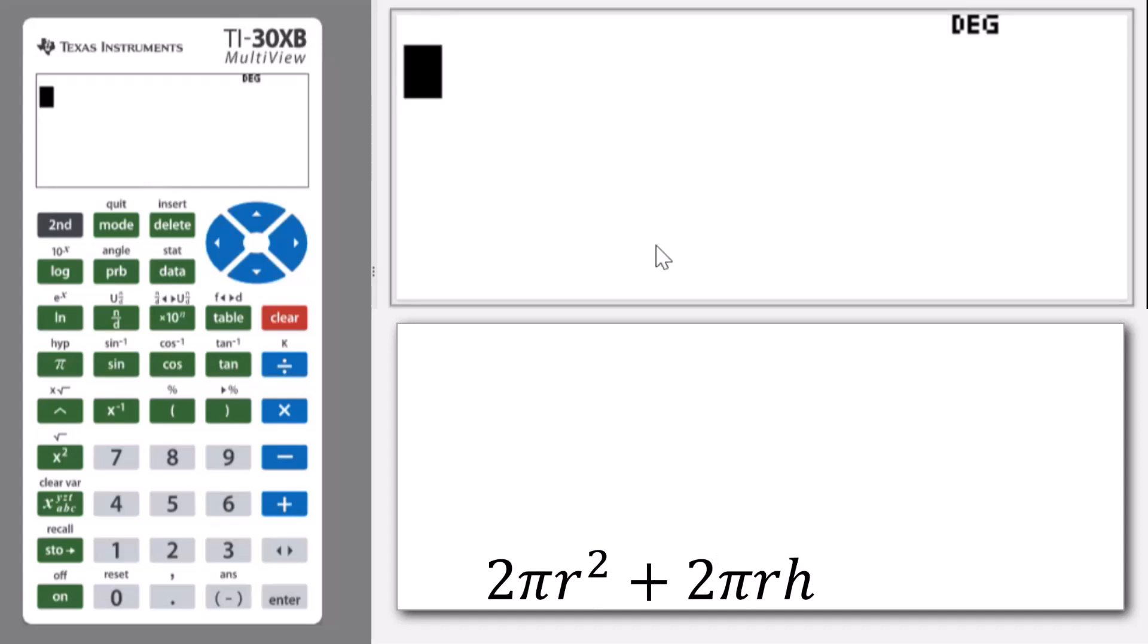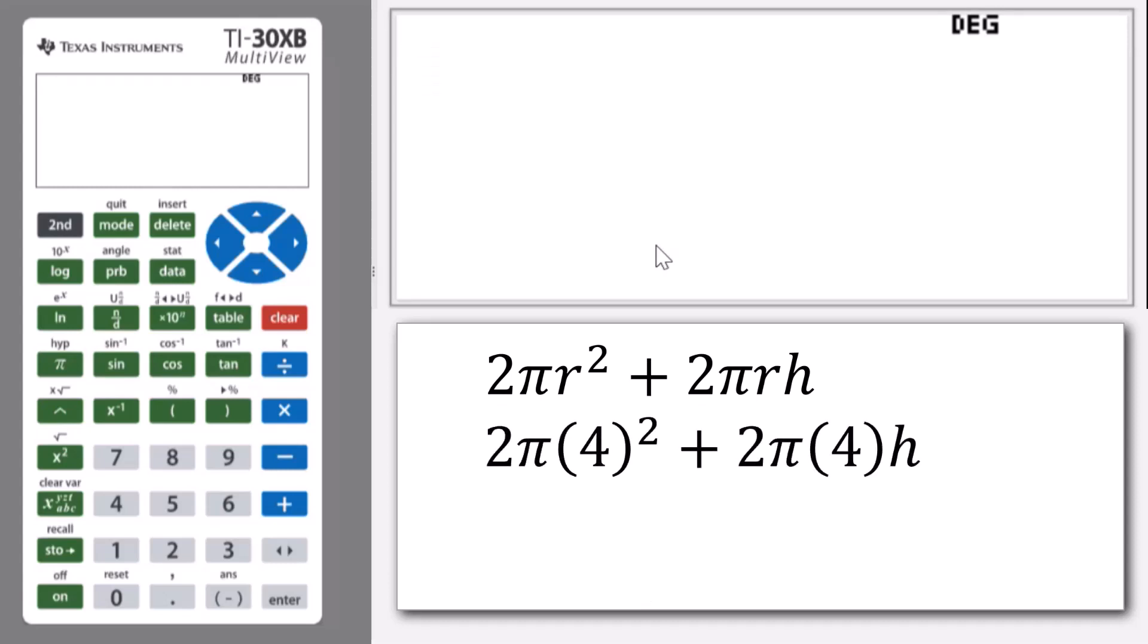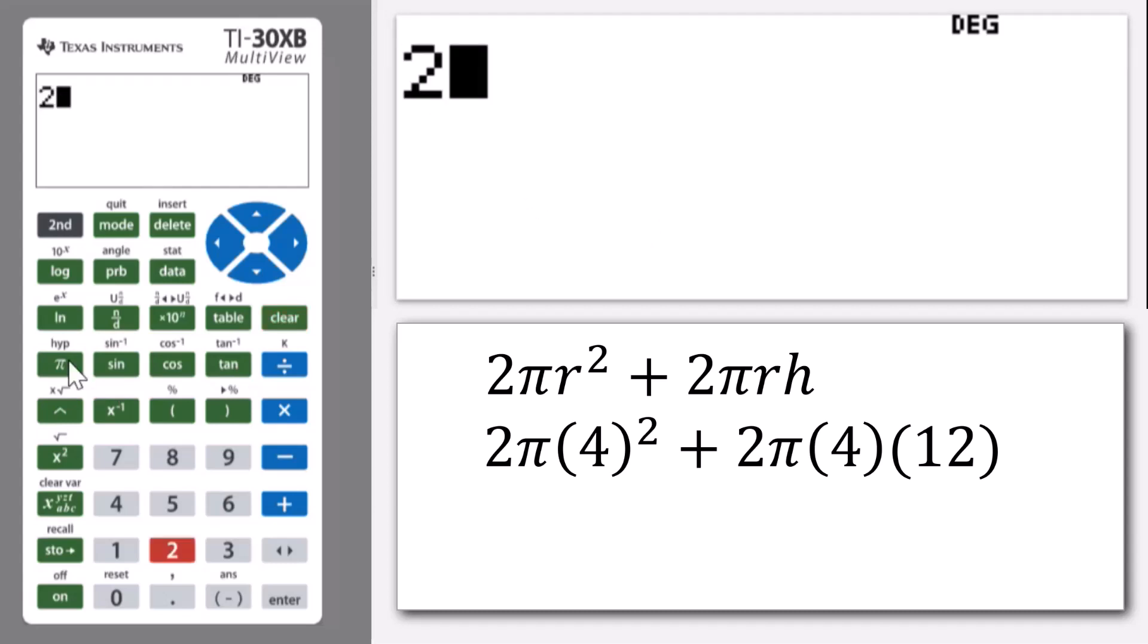So if I have a cylinder of radius 4 centimeters and of height 12 centimeters, then I can use my calculator to find that surface area by going 2 multiplied by π. You can use this π button and that's a much better value to use than 3.14 which is just an approximation. And notice I don't have to put a multiply in between those.